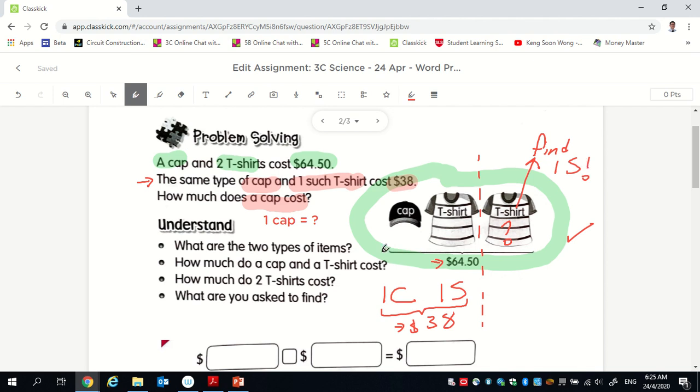So you might want to find this first. So you realize that two t-shirt, one cap, this amount. One t-shirt, one cap, this amount. One t-shirt, you realize the difference, it's just one t-shirt. So you actually can find out how much is one t-shirt. So go ahead and find out one t-shirt. But that's not the answer. The answer is one cap. But if you know one t-shirt, which is here, and you know the total is $38, I'm sure you know how to find that one cap.